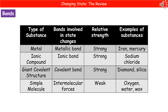If we've got a giant covalent structure, then, as the name suggests, it's a covalent bond. Covalent bonds are very strong, and these will be forming between non-metals only. And finally, our simple molecules — these only have intermolecular forces between them, and those intermolecular forces are weak. Therefore, these are the ones that have the lower melting points and boiling points.